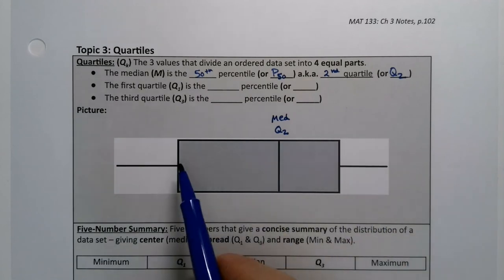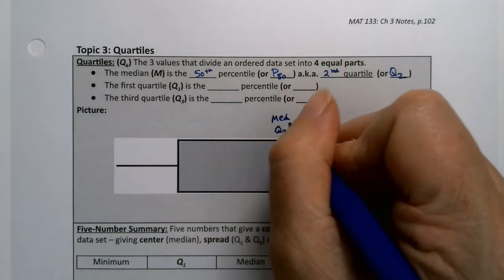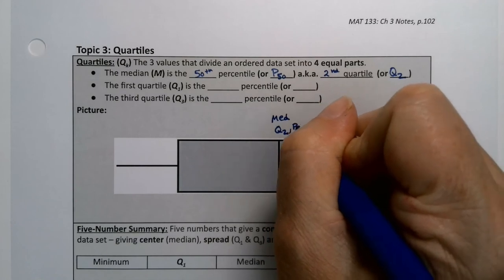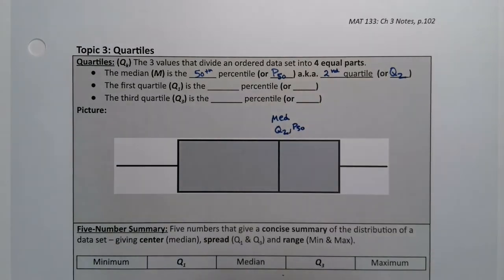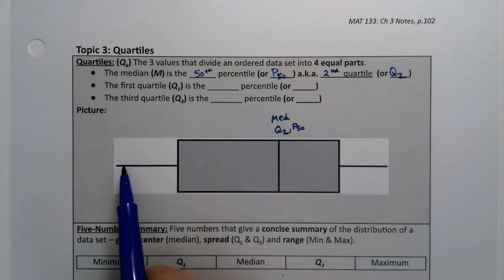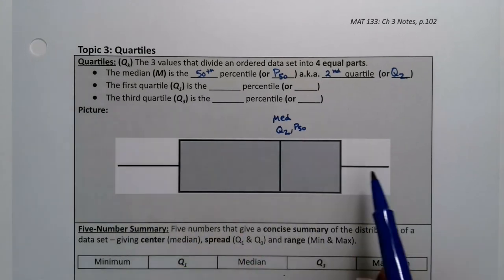So the 50th percentile or the second quartile, P50. Why is it that way? Well because 50% of the data would be at or below that score, right? It's 50% below, 50% above.